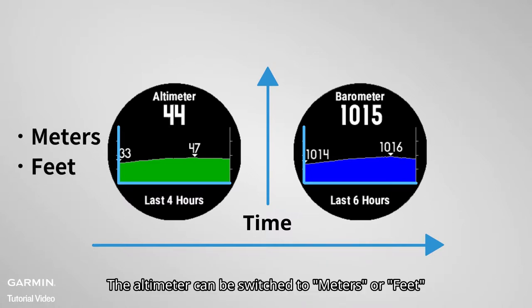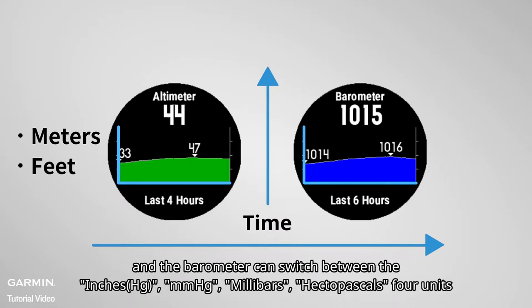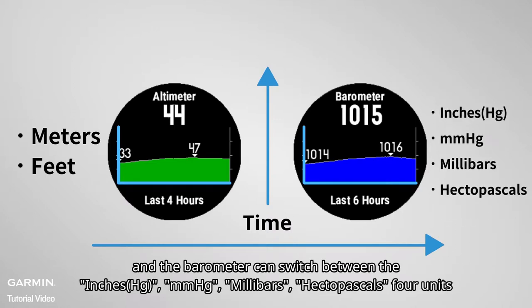The altimeter can be switched to meters or feet, and the barometer can switch between inch, mmHg, millibars, and hPa — four units.